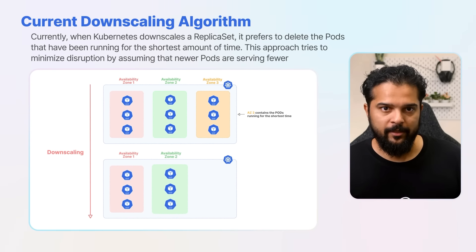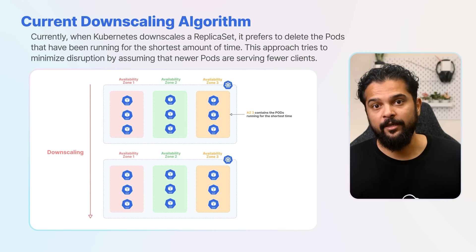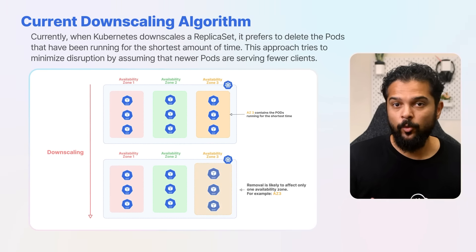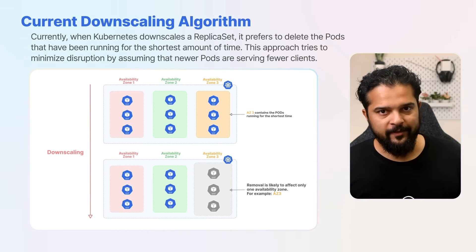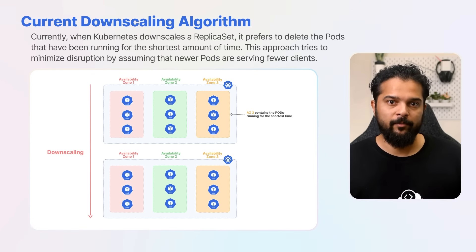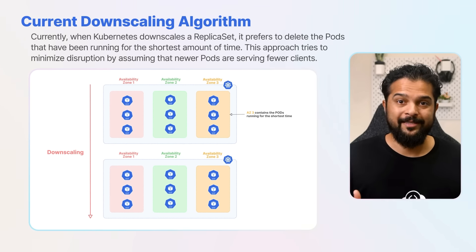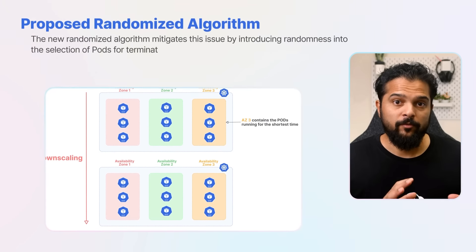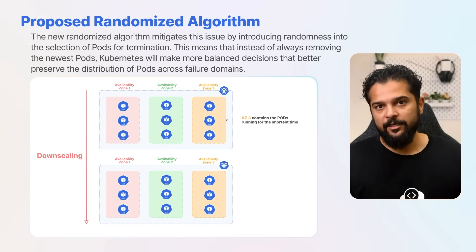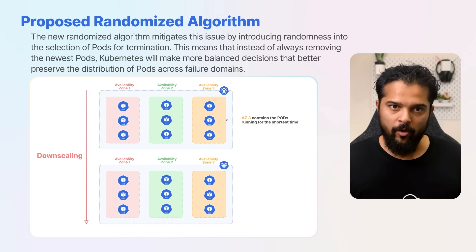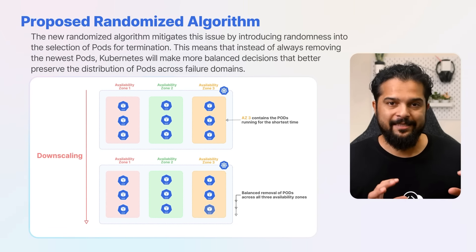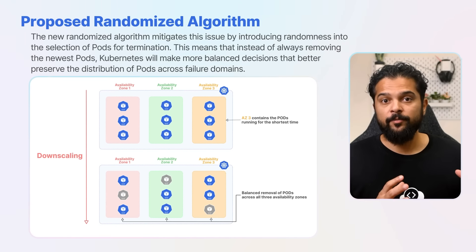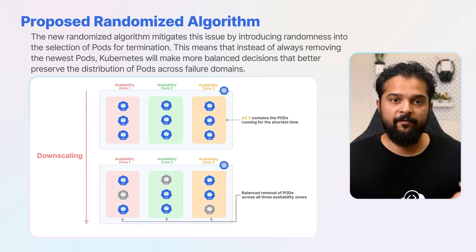Currently, when Kubernetes downscales a replica set, it prefers to delete the pods that have been running for the shortest amount of time, trying to minimize disruption by assuming newer pods serve fewer clients. However, this can cause issues in high availability scenarios where pods are distributed across multiple failure domains, such as different availability zones in a cloud environment. The new randomized algorithm mitigates this issue by introducing randomness into the selection of pods for termination, so instead of always removing the newest pods, Kubernetes makes more balanced decisions that better preserve distribution across different failure domains.